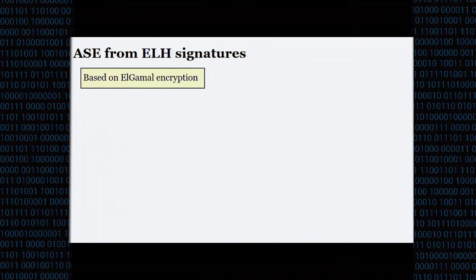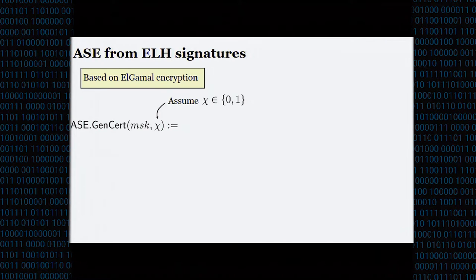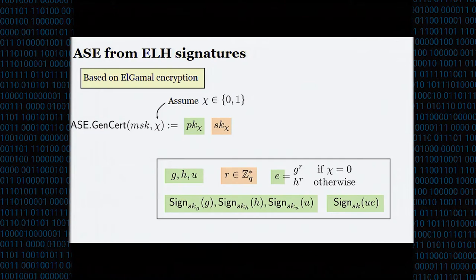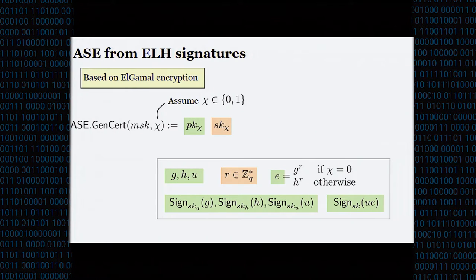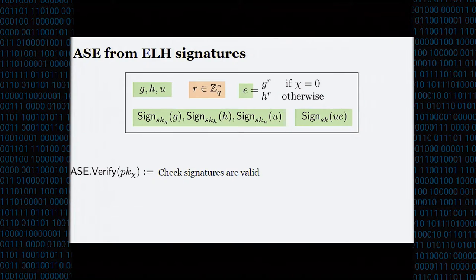Now let's build our attribute-selective encryption scheme. For simplicity, assume there's just one attribute bit. We generate a public key containing three group elements G, H, and U, plus another group element E which is either G^R if χ=0 or H^R if χ=1, where R is a random value comprising the secret key, with appropriate signatures signed by the CA on these public key values. Verification is straightforward — we just check that the signatures are valid. Unlinking is also relatively straightforward: we raise each public key element to a random R', and because of the properties of the ELH signature scheme, the signatures will be valid on these modified elements. We also multiply the secret key by R'.